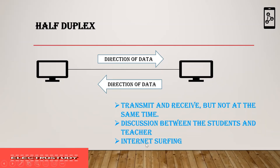Another real-time example of half duplex is internet surfing. When we surf and press enter, only then is information displayed from the server. When I am typing, I am transmitting data to the server. When the server is sending me data, I am not typing anything. This is an example of half duplex mode.